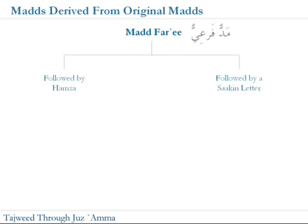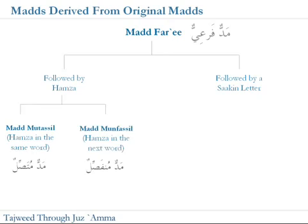The first thing to note is if you have the original madd and it's followed by a hamza, or it's followed by a letter that is sakin, then we're going to apply certain rules. Starting with when it's followed by the hamza: if the original madd is followed by a hamza in the same word, it changes into a derived madd known as mad mutassil. If the original madd is followed by a hamza but the hamza is the first consonant of the next word, then the derived madd is known as mad munfassil.